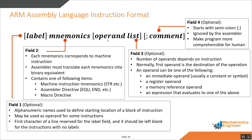The third field is the operand list. Some instructions in Cortex-M will have no operand, while others might have as many as four operands. The number of operands depends on the type of instruction. The first operand is normally the destination of the operation. An operand can be an immediate operand, a register operand, a memory reference operand, or an expression that evaluates to one of the above.